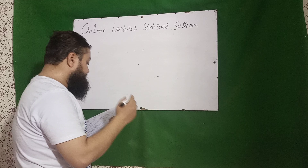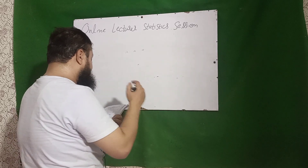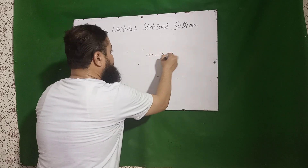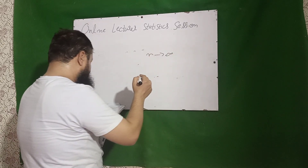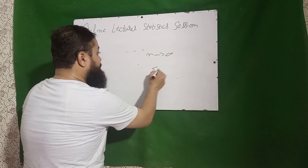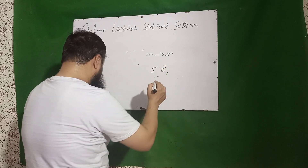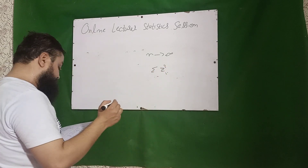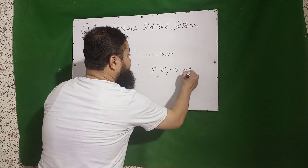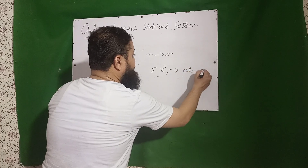Next question: discrete multinomial follows chi-square when n approaches infinity. Next question: the sum of squares of all standard normal random variables will become chi-square distribution.